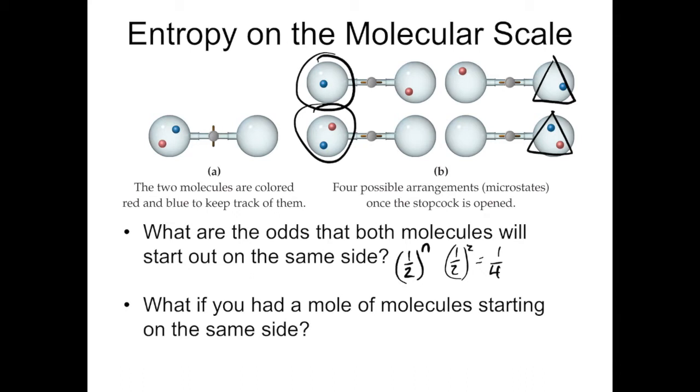Now we can scale that up to three molecules with two possible options, the left side or the right side, and you would end up with a value of one over two to the three. So if you have three molecules, the odds of them all ending up on the same side is one in nine. And that's the randomness that's involved with two or three molecules moving between two different locations.